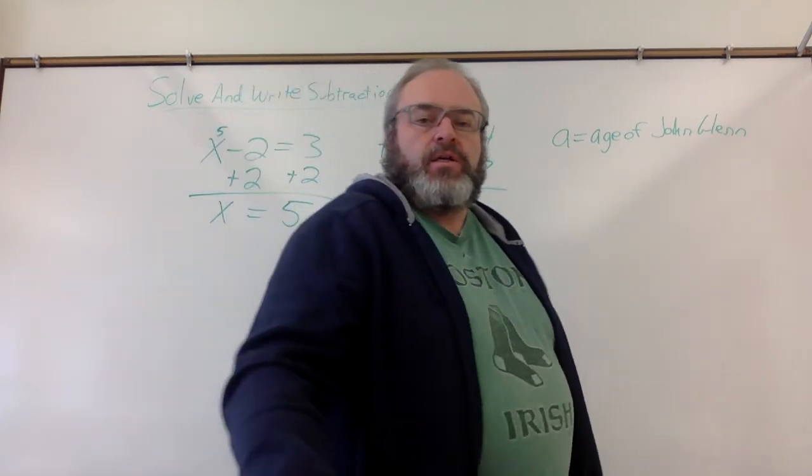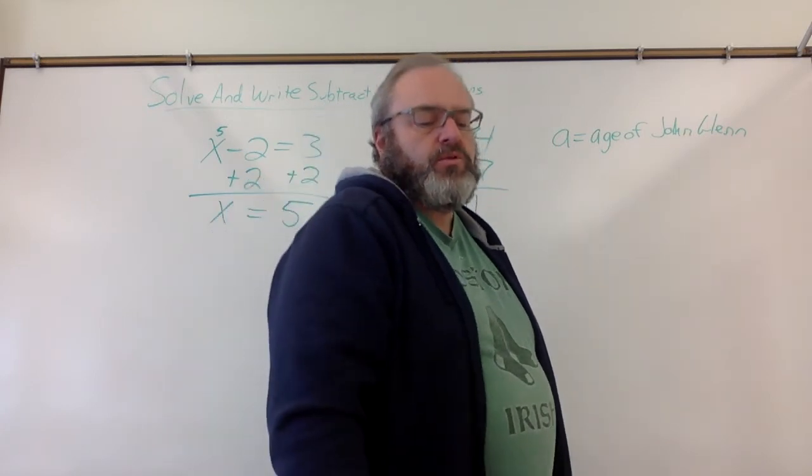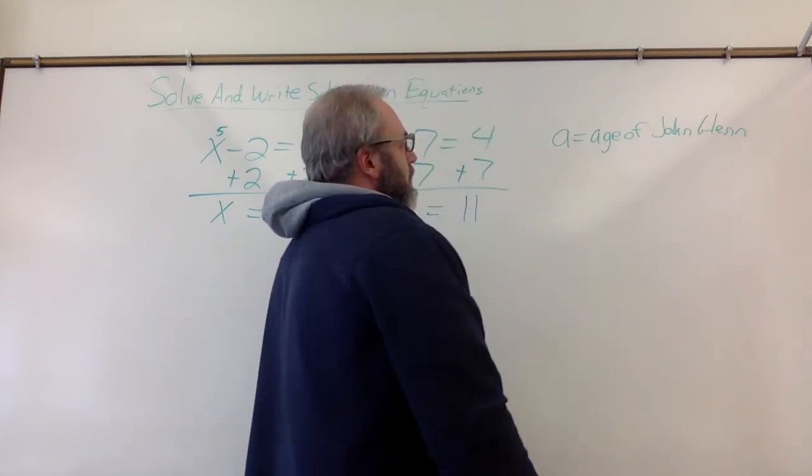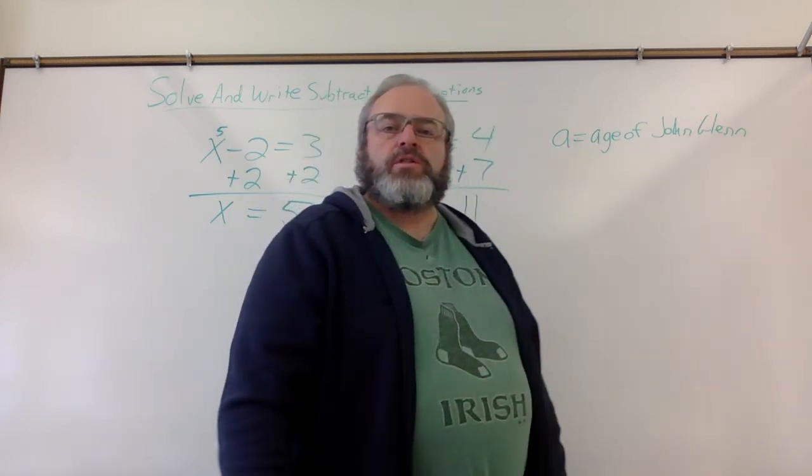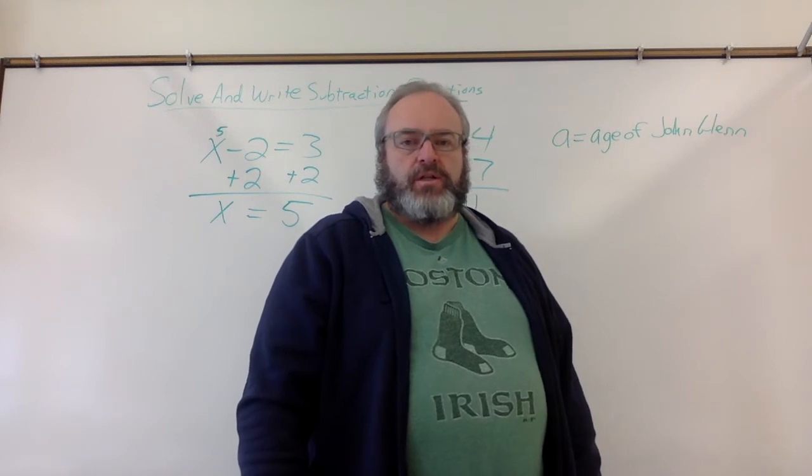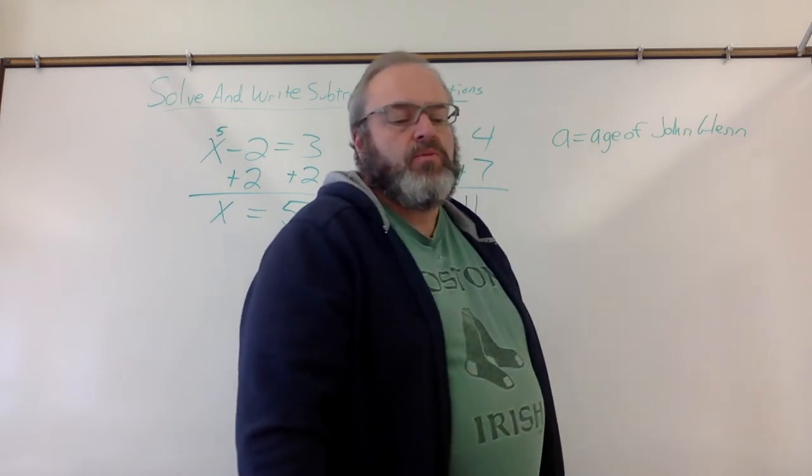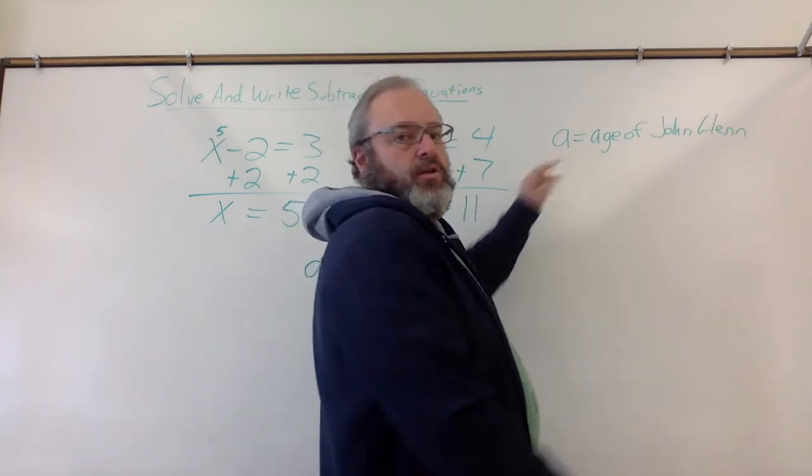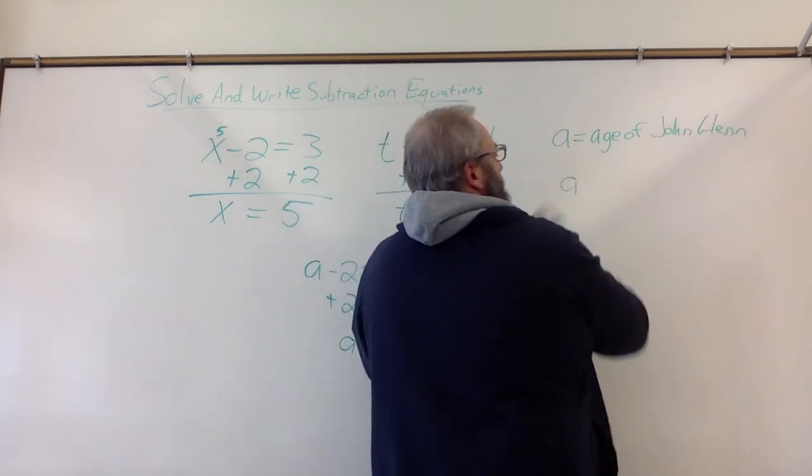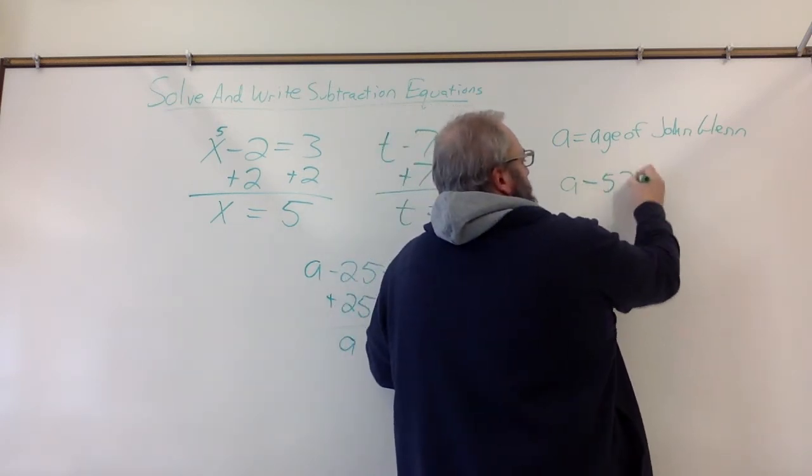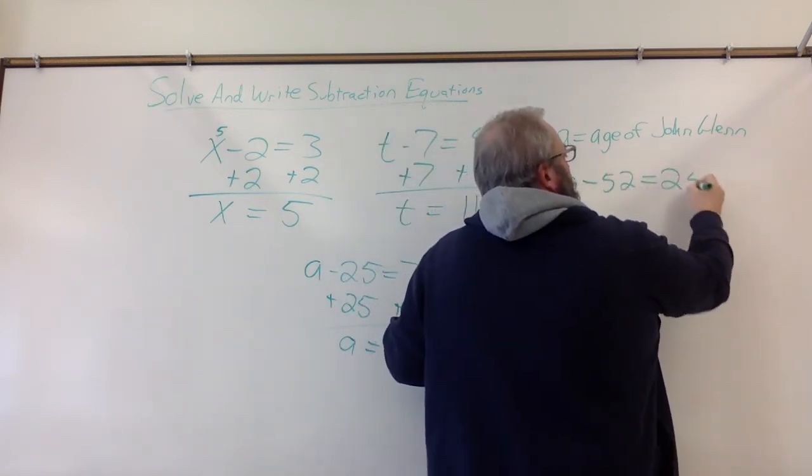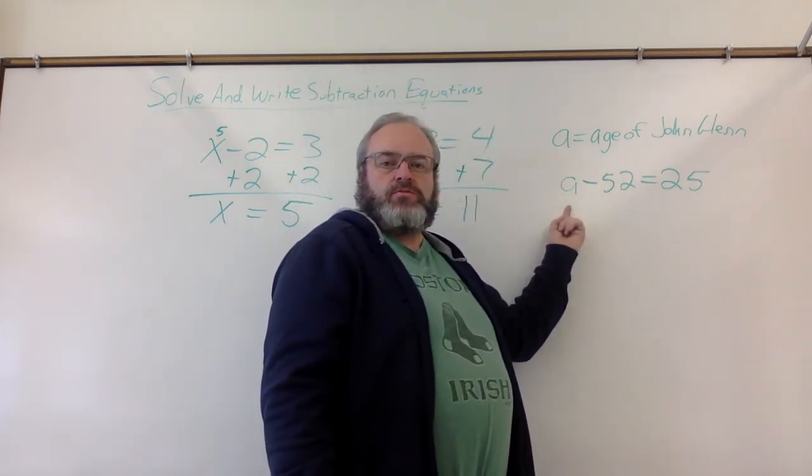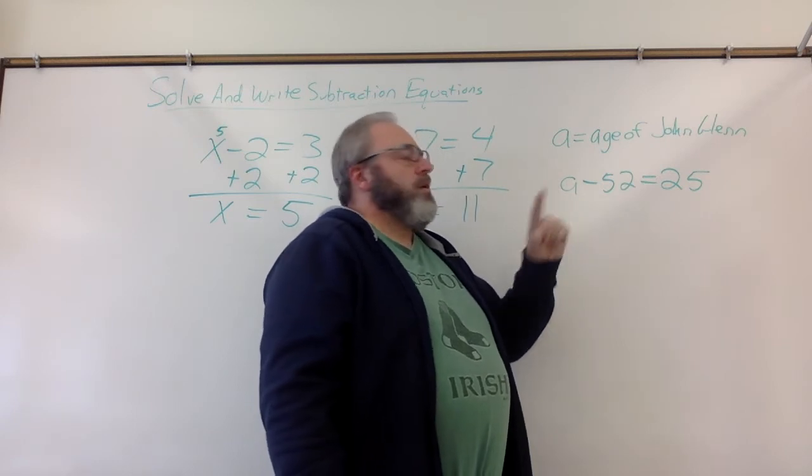Now, it says that German Titov was 52 years less than John Glenn. So, if he was 52 years less than John Glenn and he was 25, we want to know John Glenn's age, then we would have a minus 52 equals 25. Does this mean 52 less than John Glenn's age? Yes, it does.